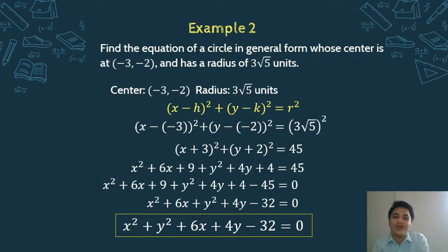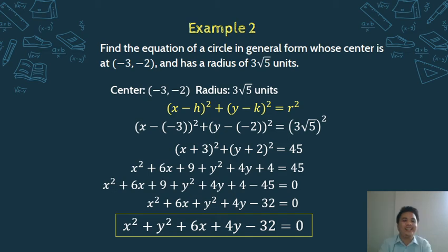And that is the general form of the circle whose center is at negative 3, negative 2, and radius is 3√5 units. It's that basic. Go ahead and copy and digest that.